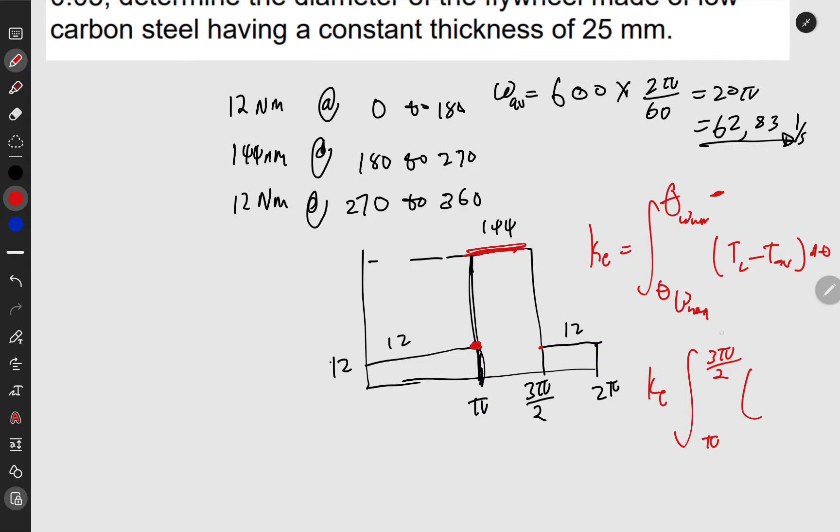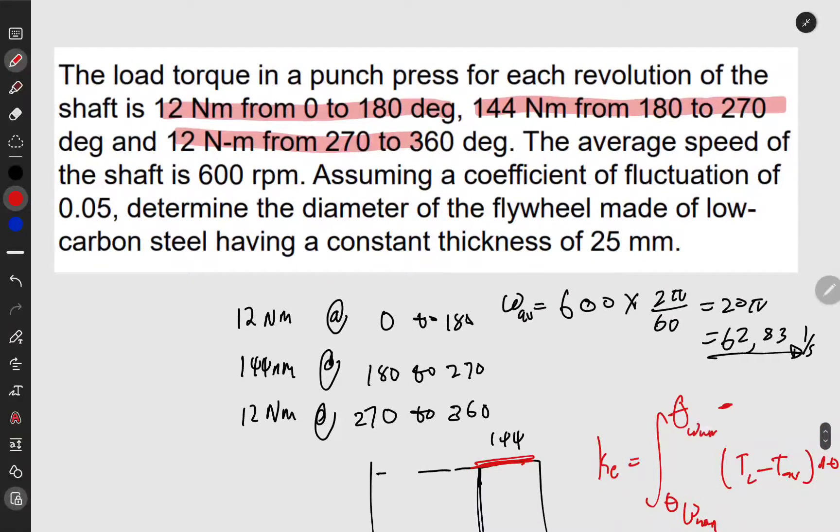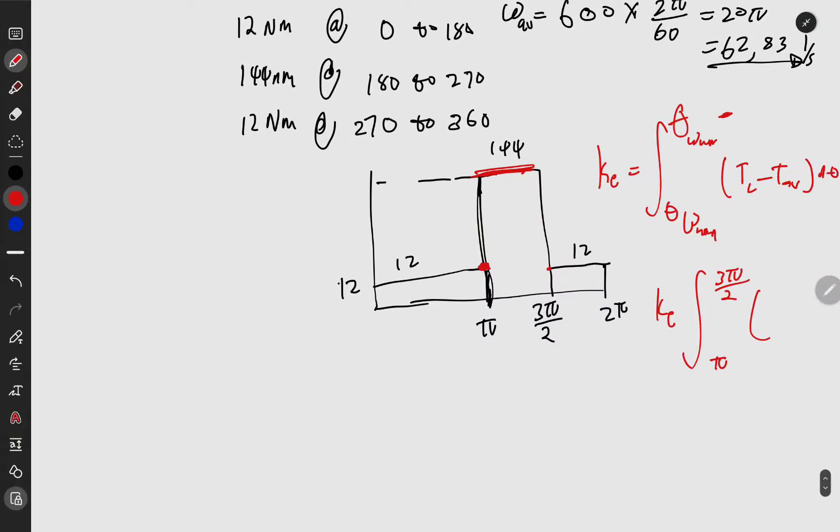What is our T_load? T_load is the maximum torque, 144, minus torque average. Torque load average is the sum of all torques times their periods: 12 took π time, plus 144 took 3π/2 minus π time.